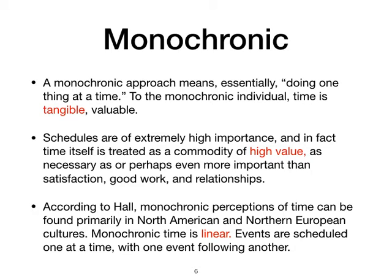North American and Northern European countries are also called low context cultures because they like doing one thing at a time, they prefer schedules, and they prefer things that are explicitly written, compared to polychronic cultures where things are complex with a lot of context. Whenever you talk about monochronics, it's basically the low context culture that we are talking about — we've already discussed what low context culture is, so you can relate to that.